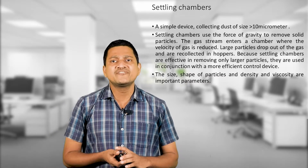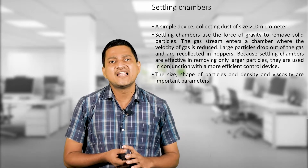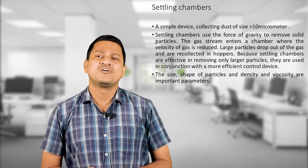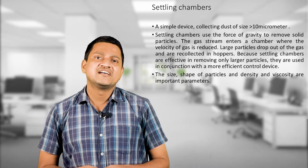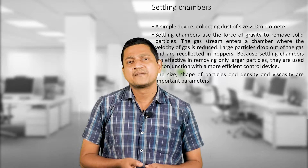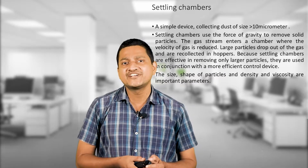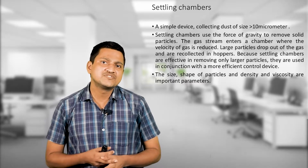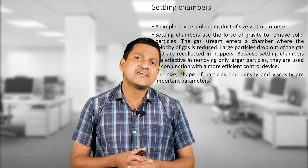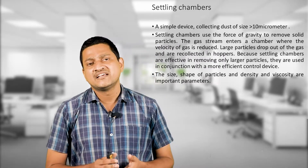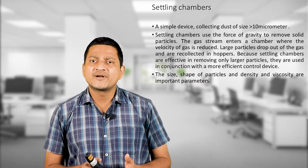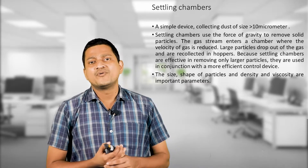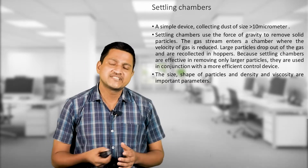Settling chambers use the force of gravity to remove solid particles. The velocity of the gas is reduced, large particle droplets fall out of the gas and are collected in a hopper. Because settling chambers are effective only for large particles, they are used in conjunction with more efficient control devices. Shape, density, and viscosity of particles are important parameters.